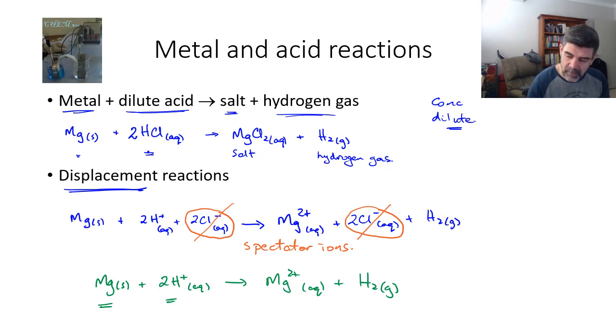It also tells us why certain other metals don't react with acids. If, for example, we were to add in copper, one of the things that we know about copper is copper is a low activity metal.